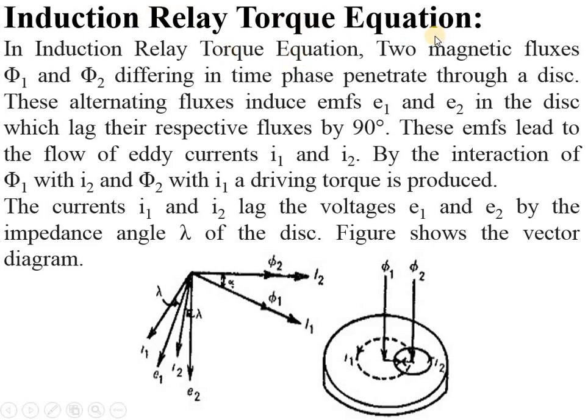For this derivation we have to consider two magnetic fluxes, φ1 and φ2, differing in time phase penetrating through a disc.